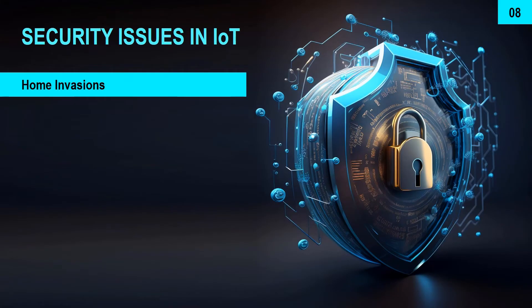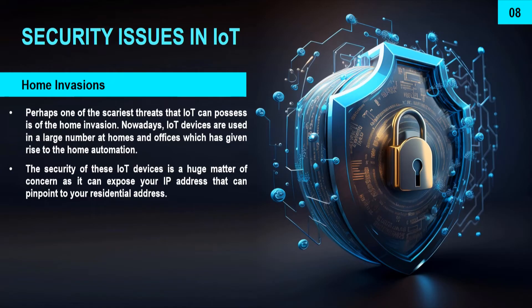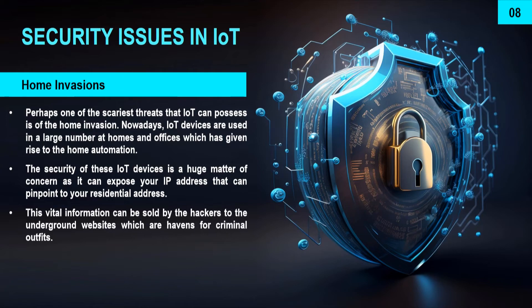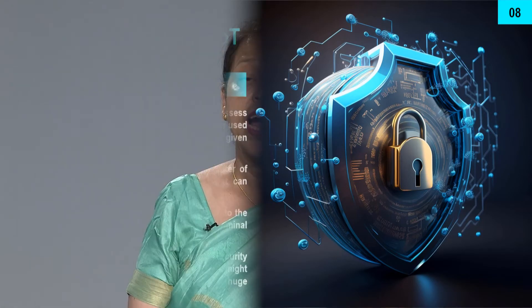Next is home invasions. Perhaps one of the scariest threats is that IoT can enable home invasion. Nowadays IoT devices are used in a large number of homes and offices, which has given rise to home automation. The security of these IoT devices is a huge matter of concern because they can expose your IP address, which can pinpoint your residential address. This vital information can be sold by hackers to criminals through websites. If you are using IoT devices in your security systems, there is a possibility that they might be compromised, leaving your house at huge risk.